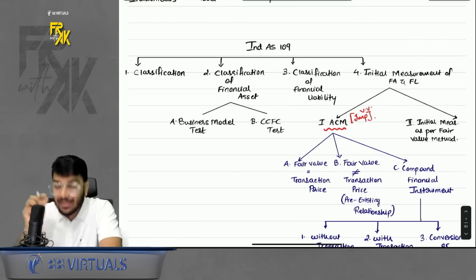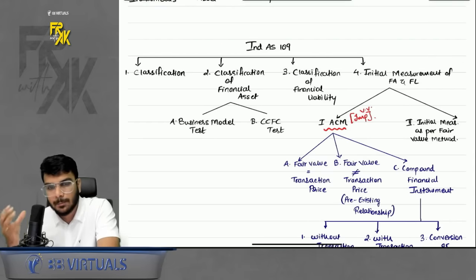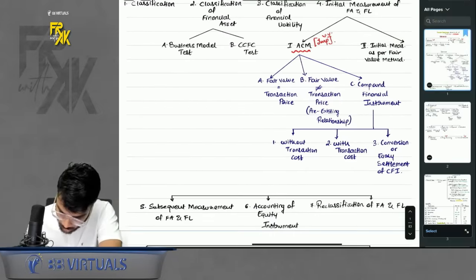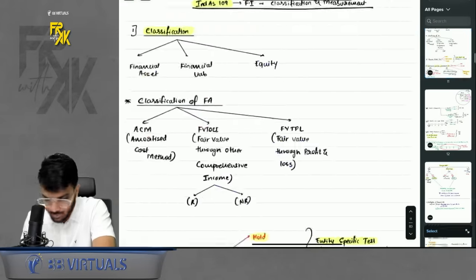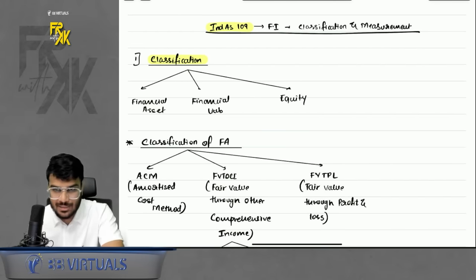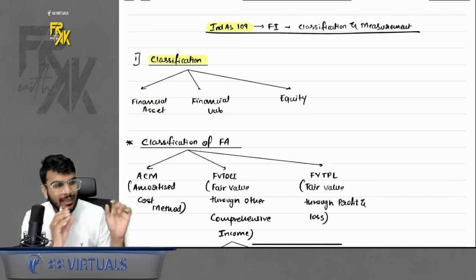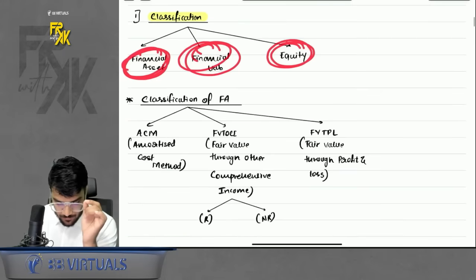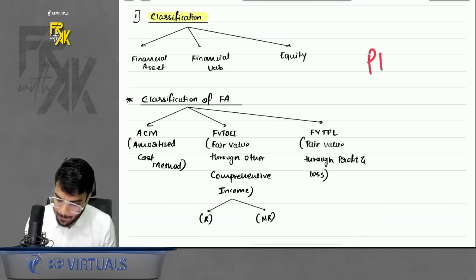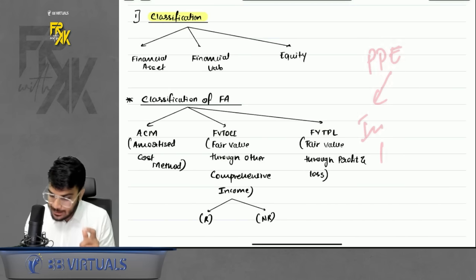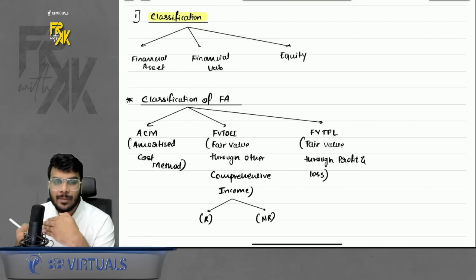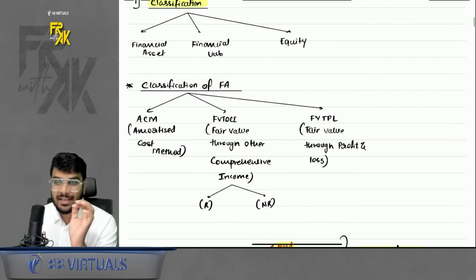Now let's proceed to IND AS 109 — the most important part where the bigger practical questions come from. The first topic under IND AS 109 is classification. Any financial instrument can be classified as a financial asset, financial liability, or equity. For financial assets, there are four accounting methods: ACM (amortized cost method), FVTOCI-R (fair value through other comprehensive income, reclassified to PnL), FVTOCI-NR (not reclassified to PnL), and FVTPL (fair value through profit and loss).